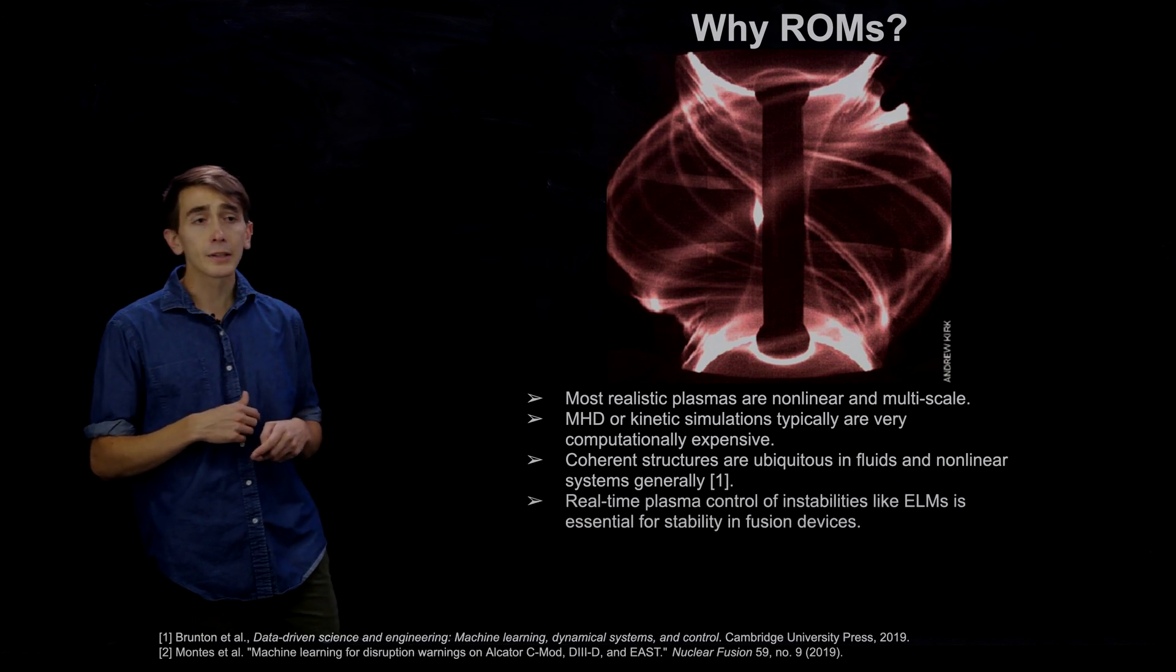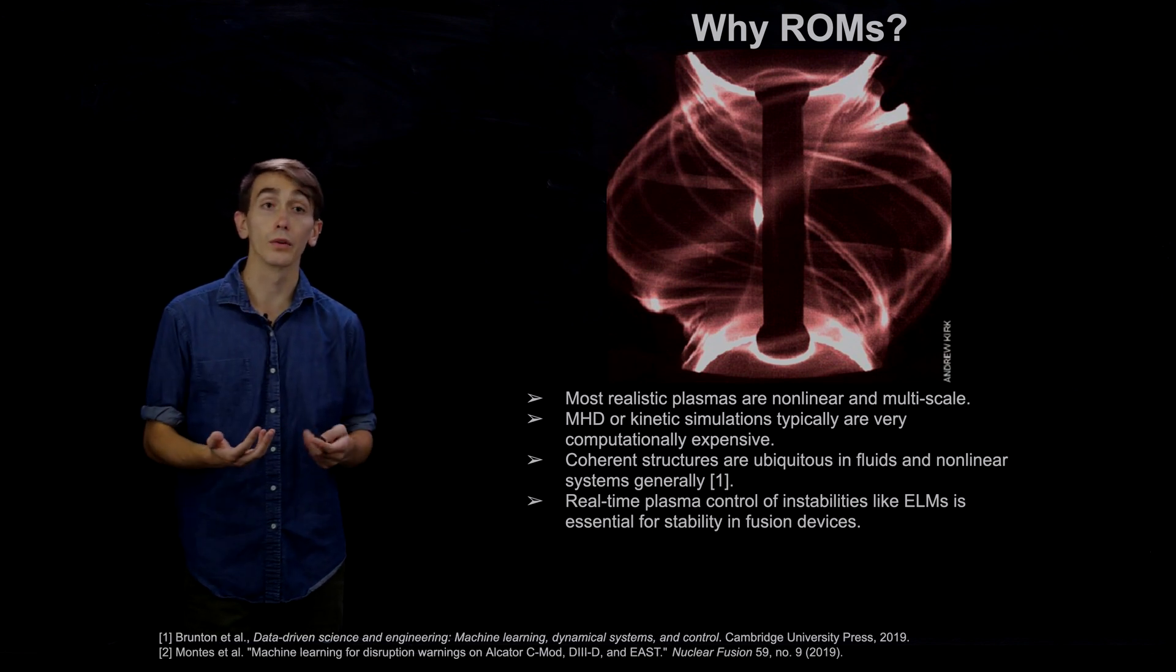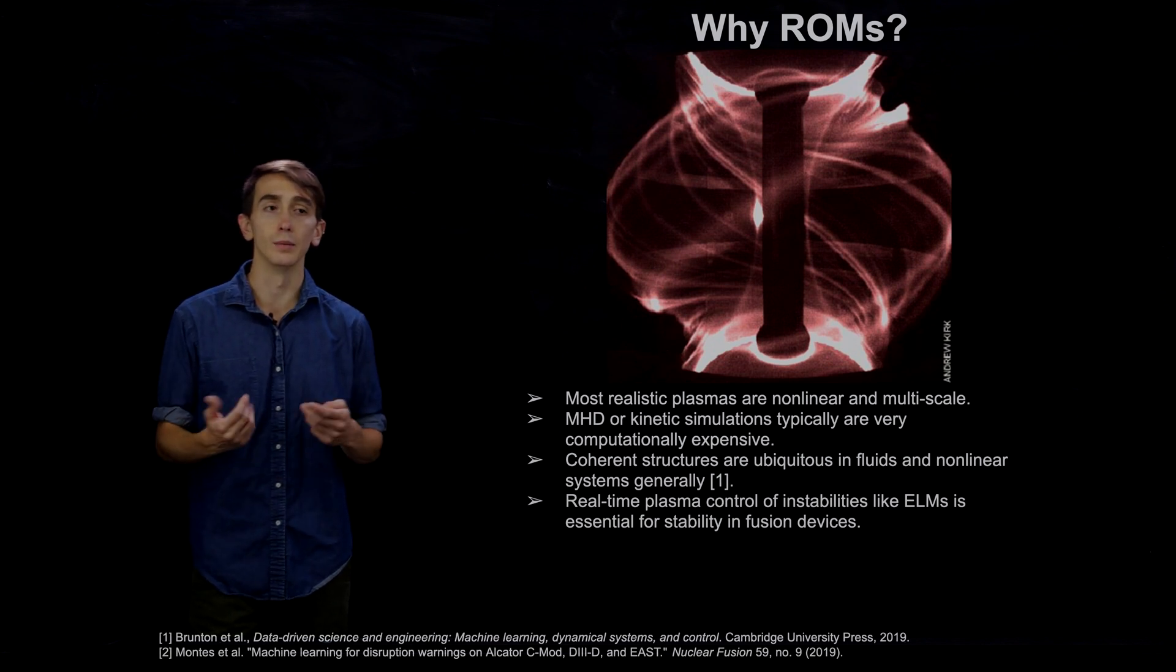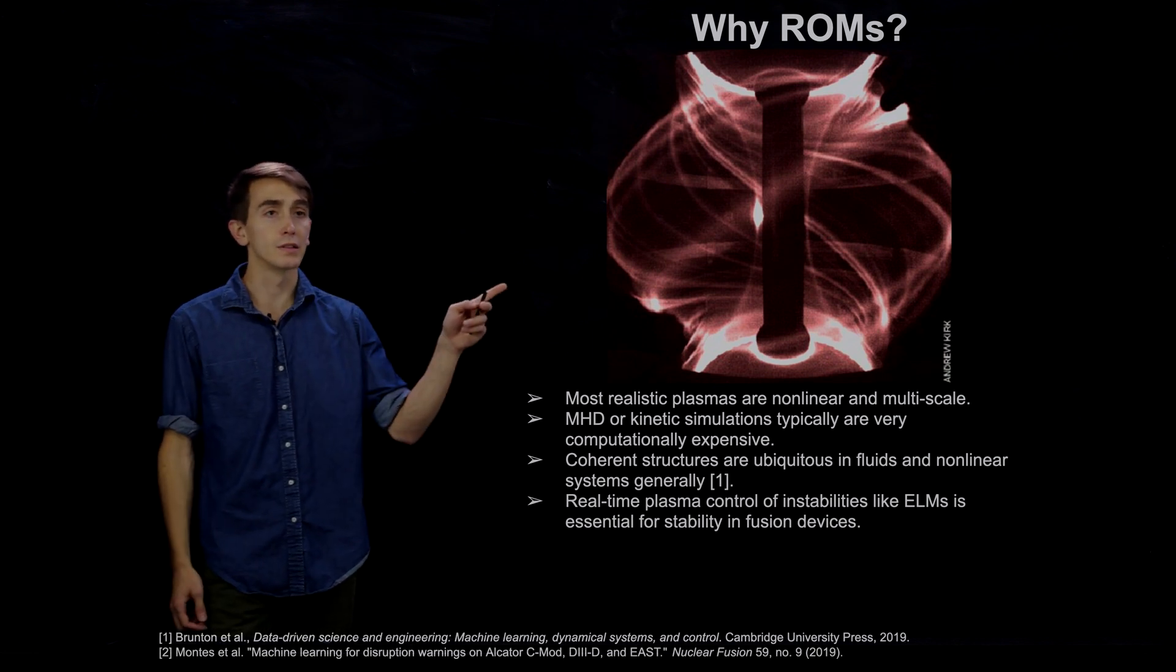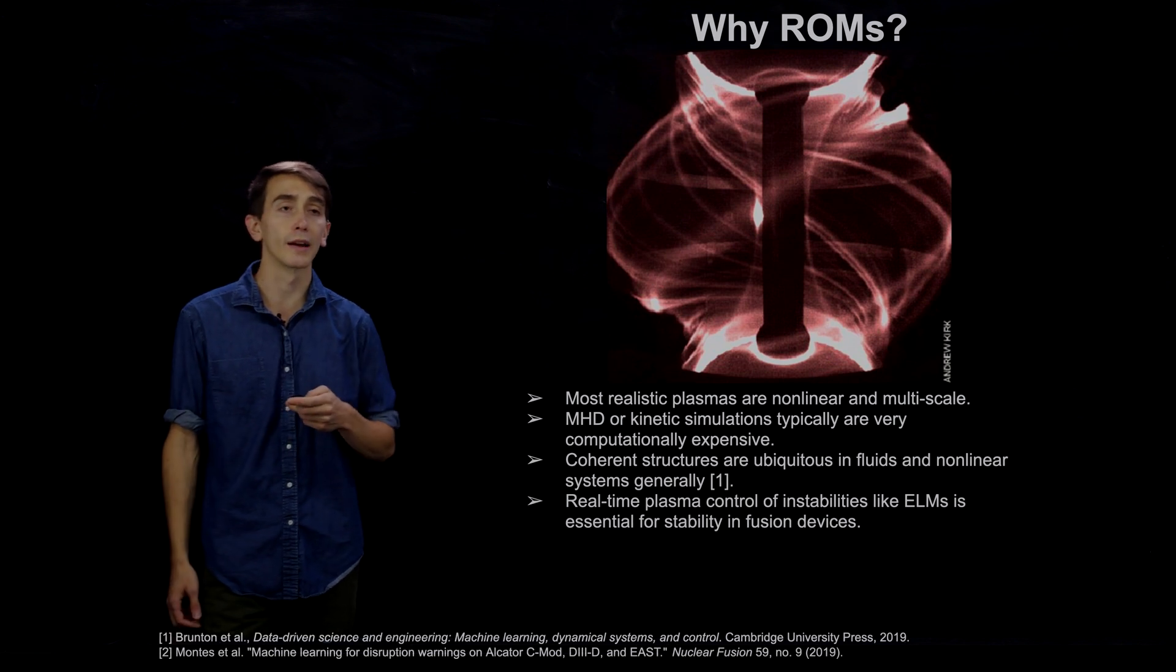And in particular, what we're going to be interested in is can we build reduced order models that are so low-dimensional we can actually use them for real-time control of plasma instabilities, for instance, like edge localized mode or ELMs. So this is actually a picture of an edge localized mode in the MAST tokamak in England.